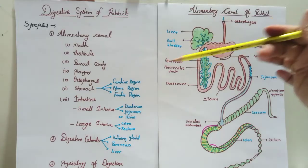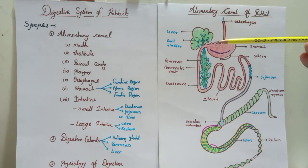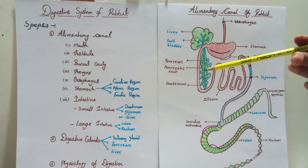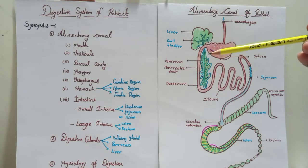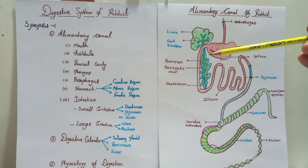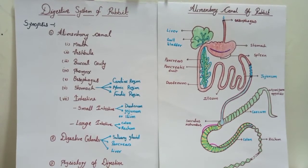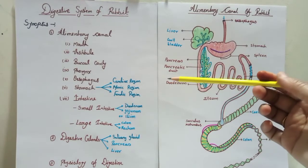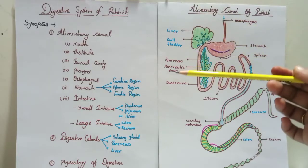Jacobson's organ is present in the buccal cavity and is responsible for recognizing what kind of food is present. When we talk about the teeth of the rabbit, it has heterodont dentition — incisors for tearing food and premolars and molars for grinding the food. Canines are not present in the rabbit. The buccal cavity opens to the pharynx, which is a narrow tube-like structure.